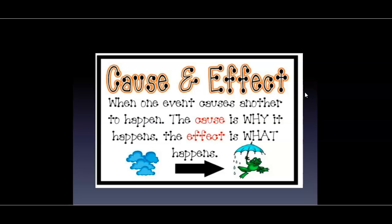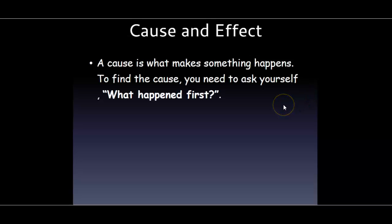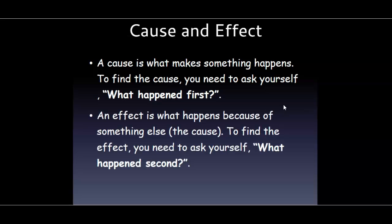The cause is why it happens, and the effect is what actually happens. So here the effect is we have an umbrella — the cause of us having an umbrella is that it rained. Because it rained, we had to get an umbrella. If the cause is what makes something happen, to figure out what the cause is, you need to ask yourself: what happened first? That doesn't always mean it's the first thing in the sentence, but it is the thing that happens in time first. The effect is what happens because of something else, because of that cause — that's why we say 'because.' To find the effect, you need to ask yourself what happened second. The effect comes after the cause.